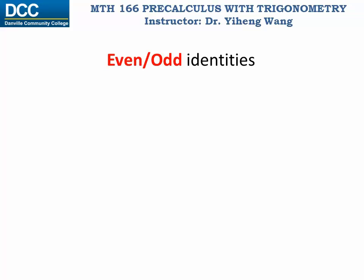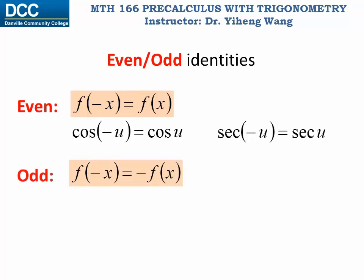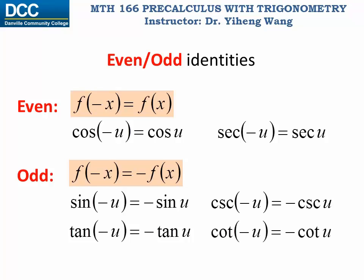Out of the six trigonometric functions, only cosine function and its reciprocal secant function are even functions. The remaining four — sine, tangent, cotangent, and cosecant — are all odd functions. For even functions, cosine of negative u equals cosine u, and secant of negative u equals secant u. For the odd functions, the evaluation at negative x equals negative f(x), so sine of negative u equals negative sine u, cosecant of negative u equals negative cosecant u, tangent of negative u equals negative tangent u, and cotangent of negative u equals negative cotangent u.